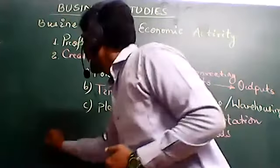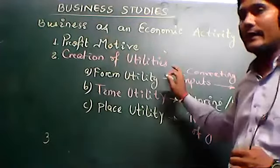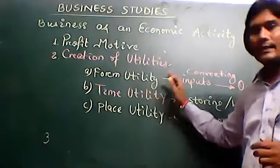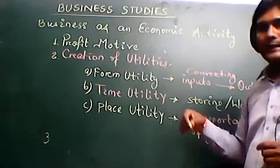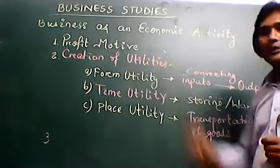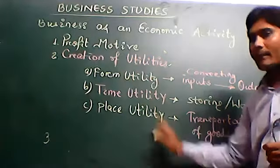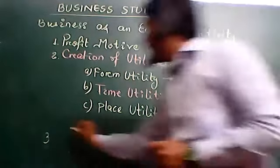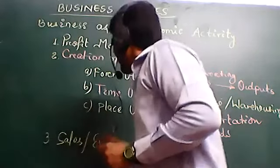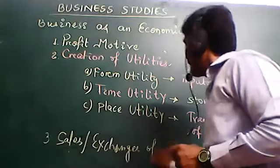The first point will be profit motive. The second is creation of utilities, in which we will discuss the type of utilities that are present — that is form utility, time utility, and place utility. And at last we will discuss about the sales or exchange of goods.